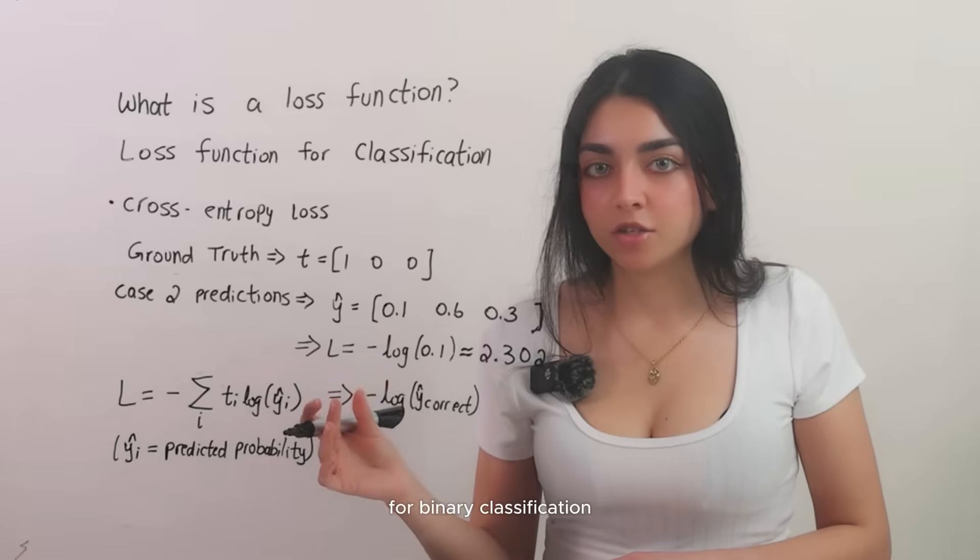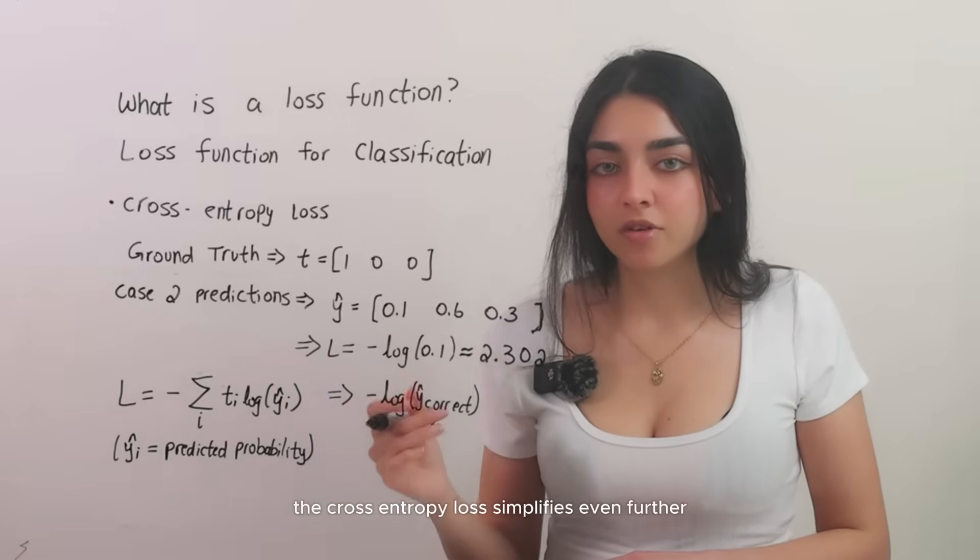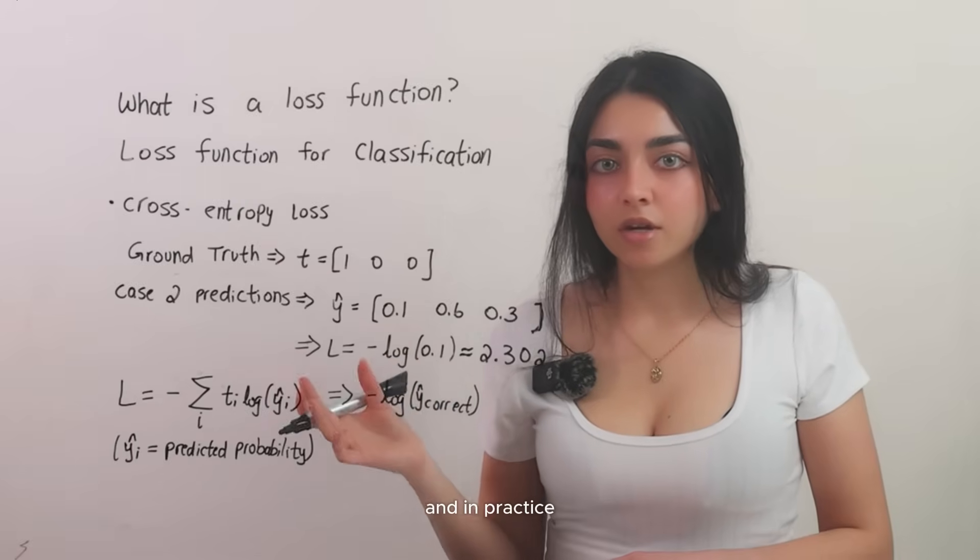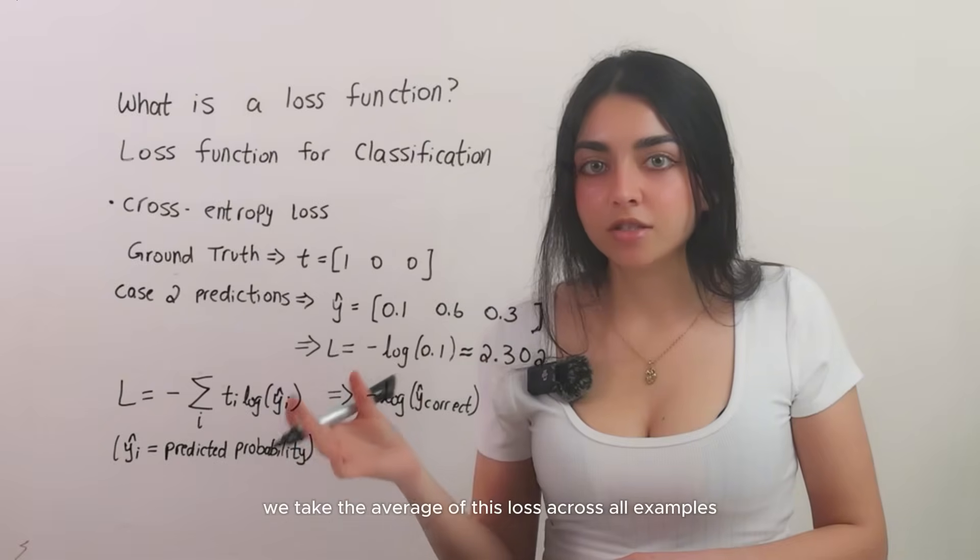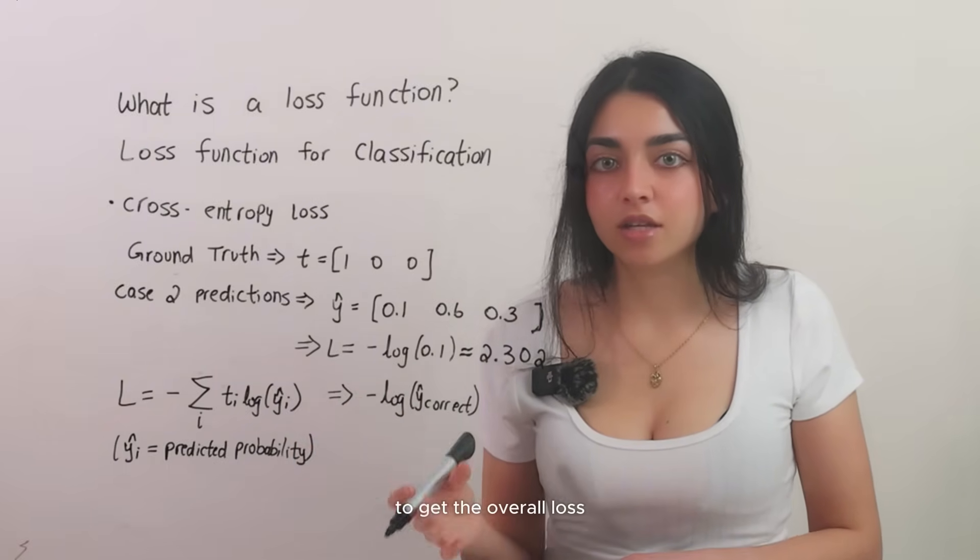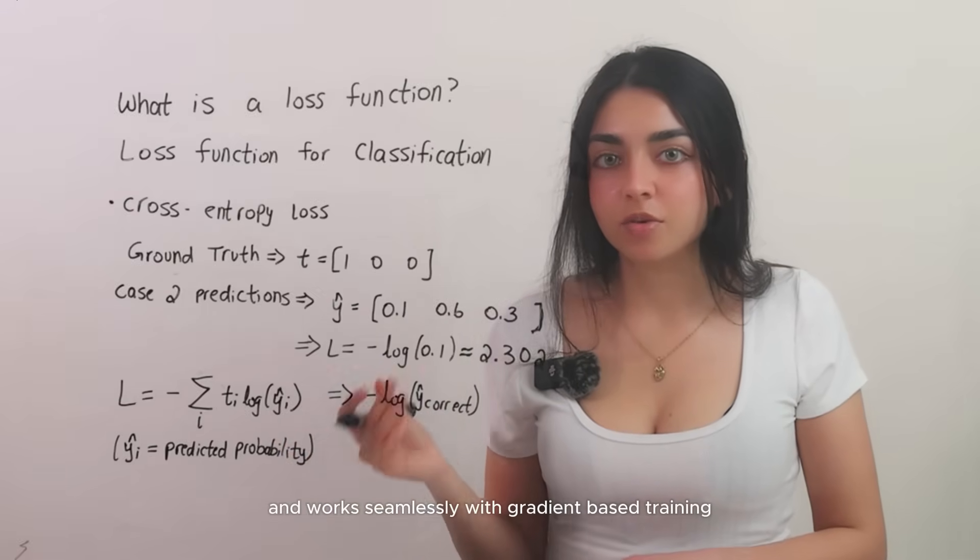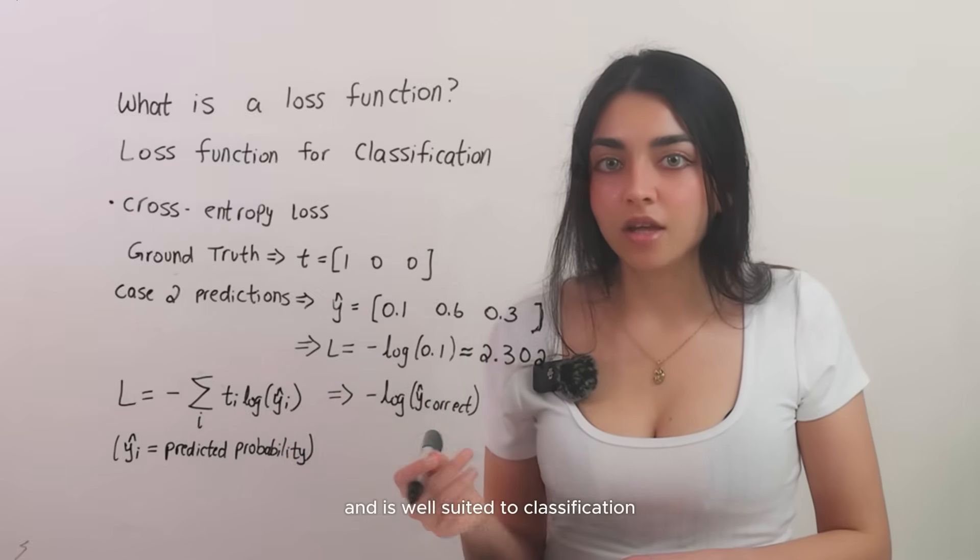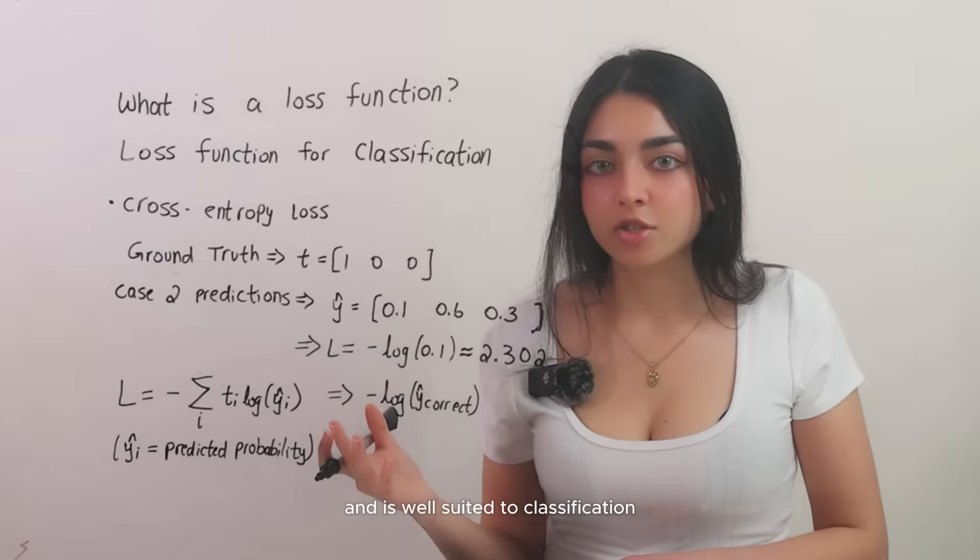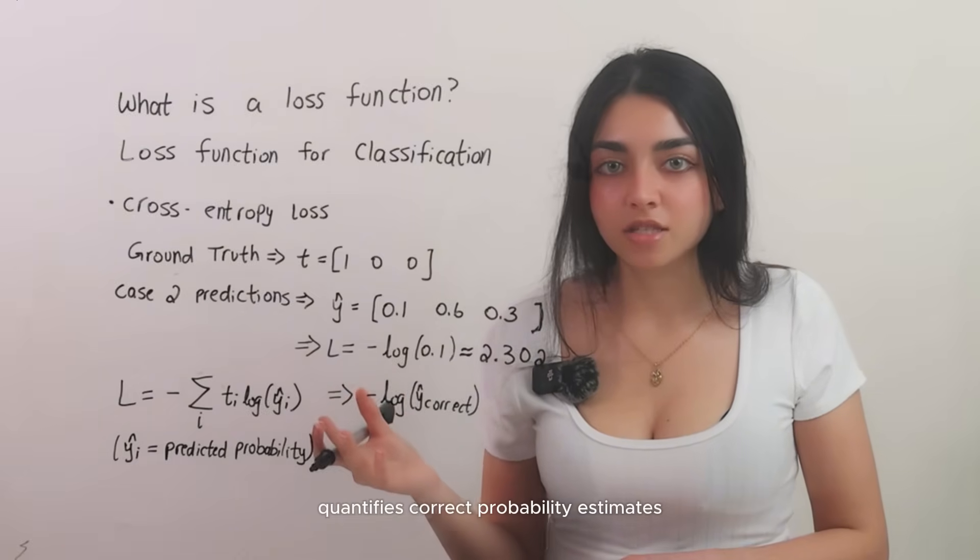This property of the cross-entropy loss pushes the neural network to put as much probability mass on the correct answer as possible. For binary classification when you have only two classes, the cross-entropy loss simplifies even further. And in practice, we take the average of this loss across all examples in the batch or data set to get the overall loss. Cross-entropy is differentiable and works seamlessly with gradient-based training and is well suited to classification because it directly incentivizes correct probability estimates.